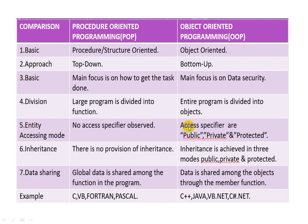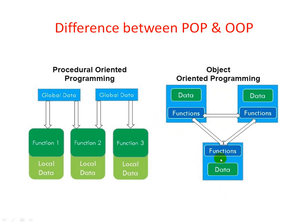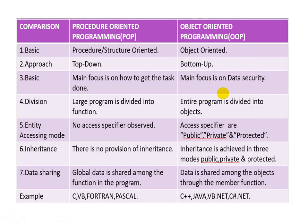Whereas in object oriented programming there are concepts of access specifiers: public, private, and protected. When data is declared private, it will not be accessible from outside, giving us total security. In procedural oriented programming there is no concept of inheritance, whereas in object oriented programming we can have private data and access it from the outside with the help of member functions.